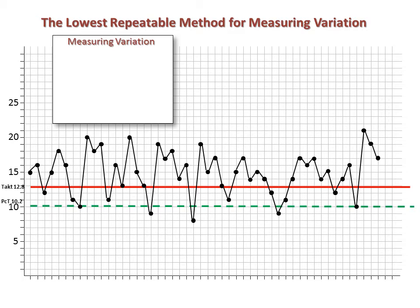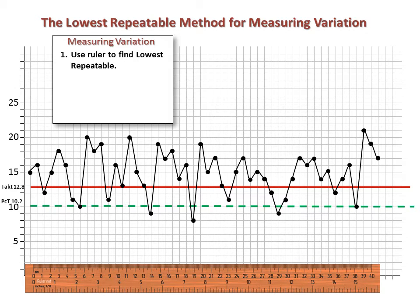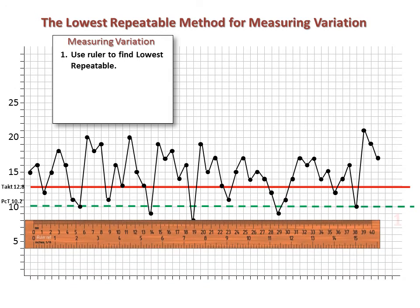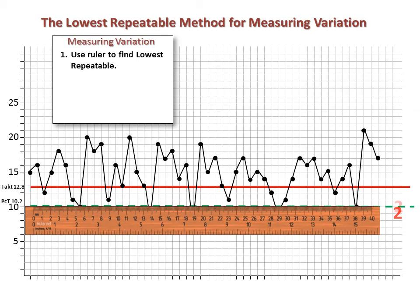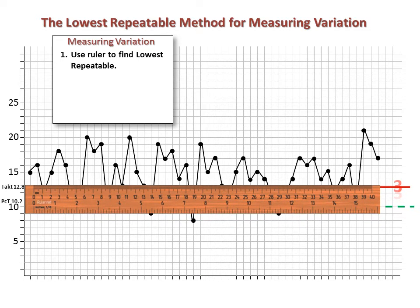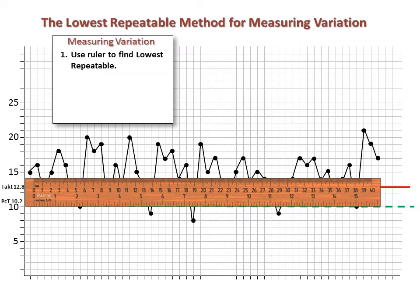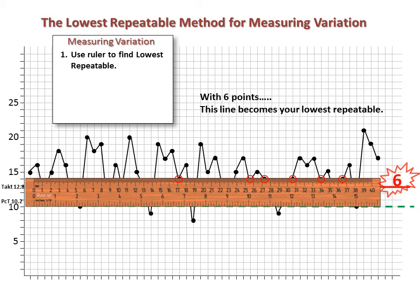We're going to learn about a simple and highly visual way of measuring and depicting variation, as well as about identifying a good estimate of what the potential performance level of the process is. We'll call this method the lowest repeatable method for measuring variation. The first thing we'll do is place a ruler horizontally on the bottom of our graph parallel to the planned cycle time line and slowly move it upwards through the data points, noting the number of data points that are close to or fall directly upon the upper edge of the ruler. The goal is to identify the lowest position of the ruler in which approximately five or six data points fall on or close to the edge. In our example, the ruler gets to the 14-second level before six points fall on its edge. This level becomes our lowest repeatable.